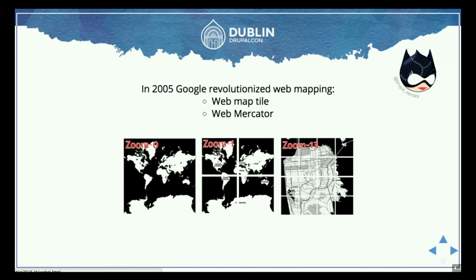Then a lot of time passed, and Google came along in 2005. They had two revolutionary ideas. First they made the world flat again in order to fit in a 256-tile. Once you zoom in, you have the web Mercator and you see that Greenland is way too big and things don't really fit on a far zoomed-out level. But if you get closer on the map, you will have perfect squares of 256 tiles with the actual buildings, roads, and infrastructure. So thanks to Google, we have this great mapping thing and we can do it in Drupal.